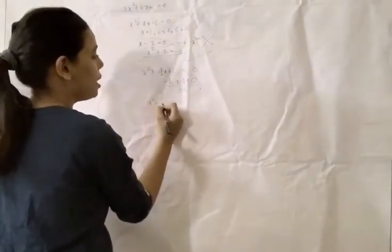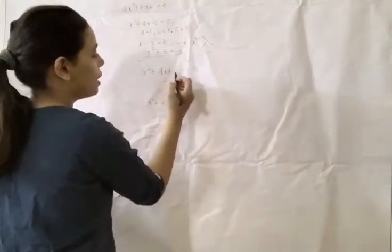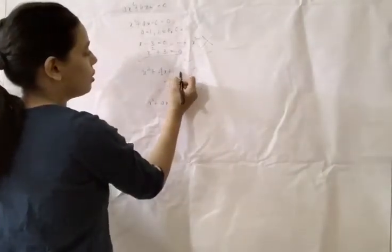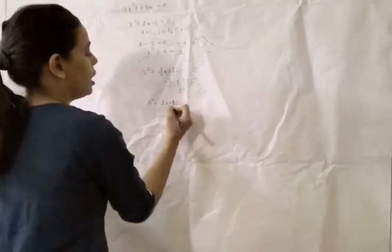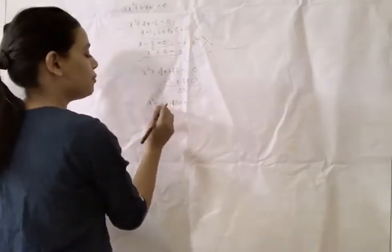X squared plus 4X plus 6 equals... we can take 12 over here. X squared plus 4X plus 12 equals 0. Then we will split the middle term.